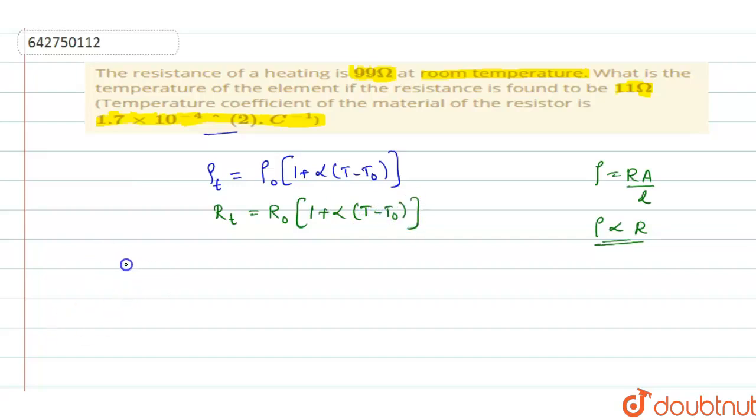Now, in this we shall substitute the values. Let us see what all values are given. 99 Ohms is the known resistance. Its corresponding temperature is room temperature, so T 0 is 27 degrees Celsius.